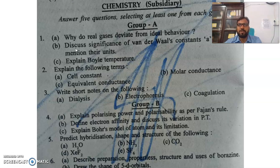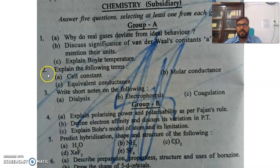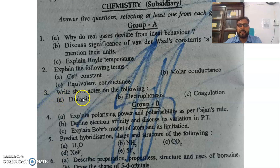So, attempt the full question. Now, the next question: explain the following terms — cell constant, molar conductance, equivalent conductance. Again, question 2 contains 3 parts, so you have to attempt all 3. Now, third question: write short notes on the following — dialysis, electrophoresis, and coagulation.